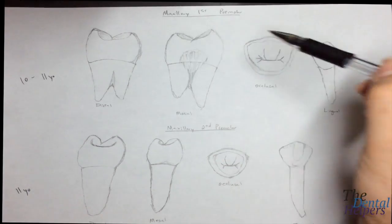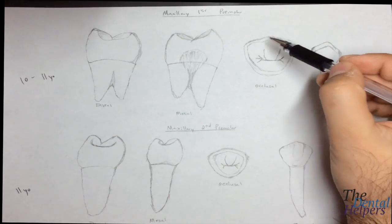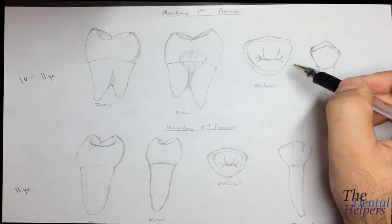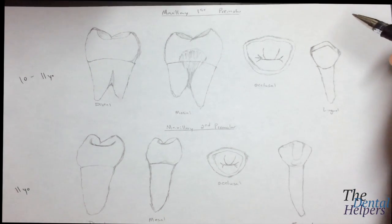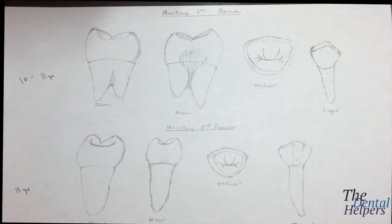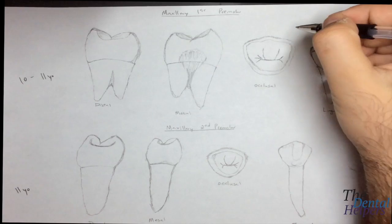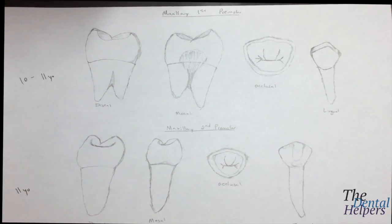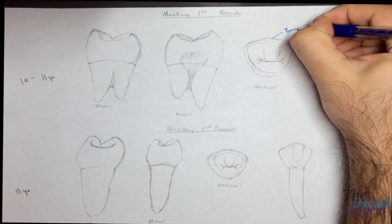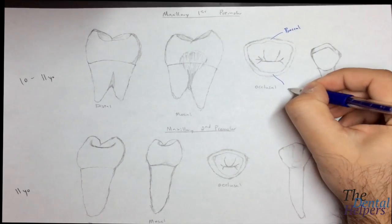On the premolars, we no longer have a cingulum. Instead, we have a cusp in the place of the cingulum. Before, in the canines and anterior teeth, we had the cingulum. Now what we have is a buccal and lingual cusp. So right here we have our buccal cusp, and then this is our lingual cusp.